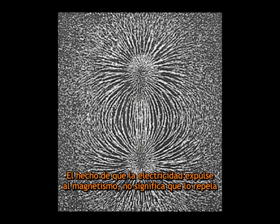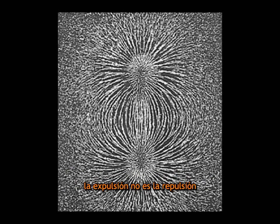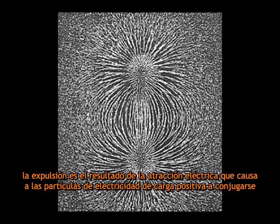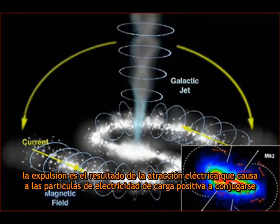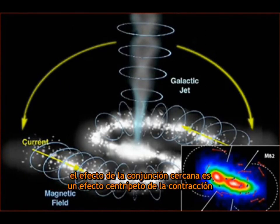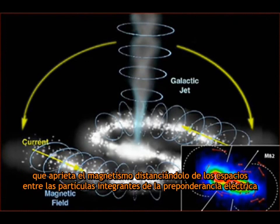The fact that electricity expels magnetism does not mean that it repels it. Expulsion is not repulsion. Expulsion is the result of electric attraction which causes electrically charged particles to draw closer together. The effect of closer assemblage is a centripetal effect of contraction which squeezes magnetism away from the spaces between the integrating particles of electric preponderance.